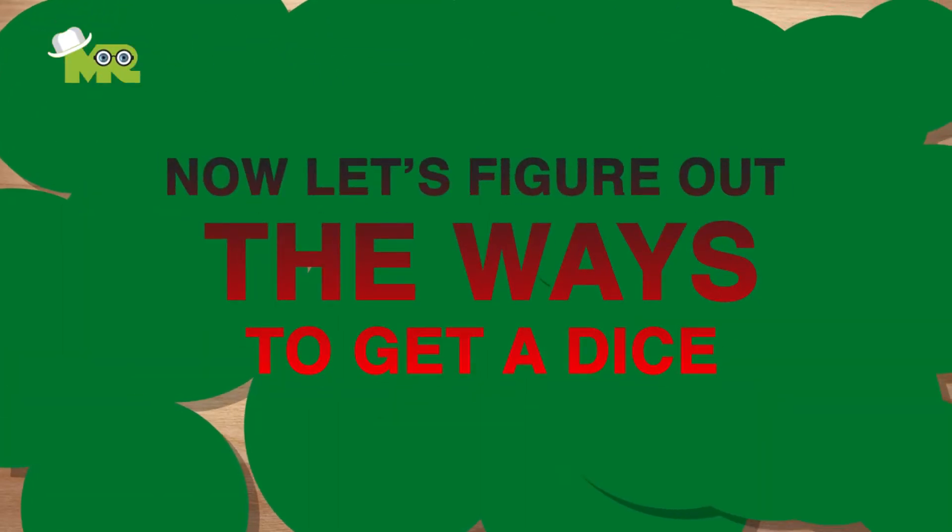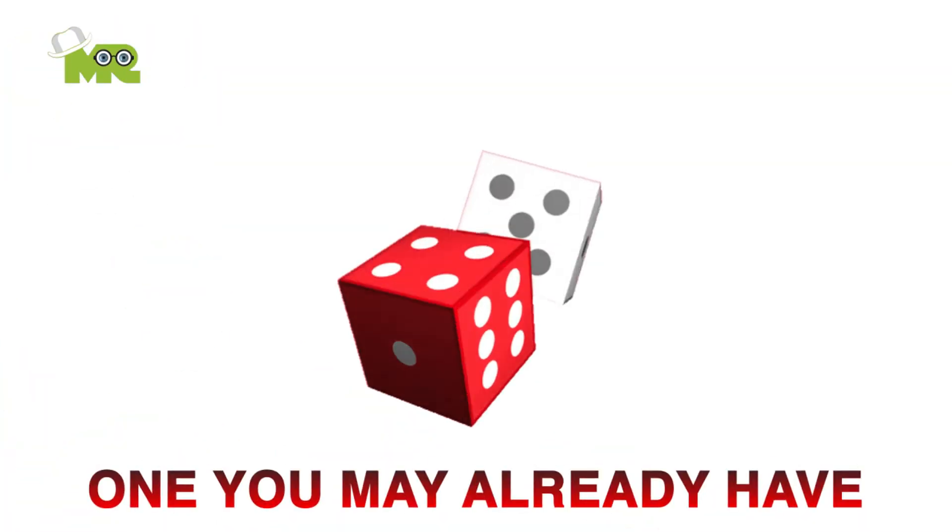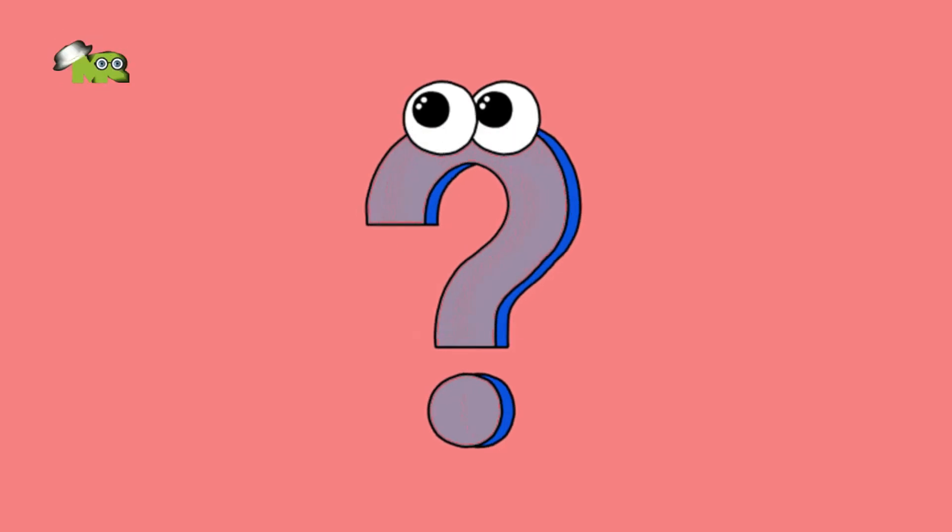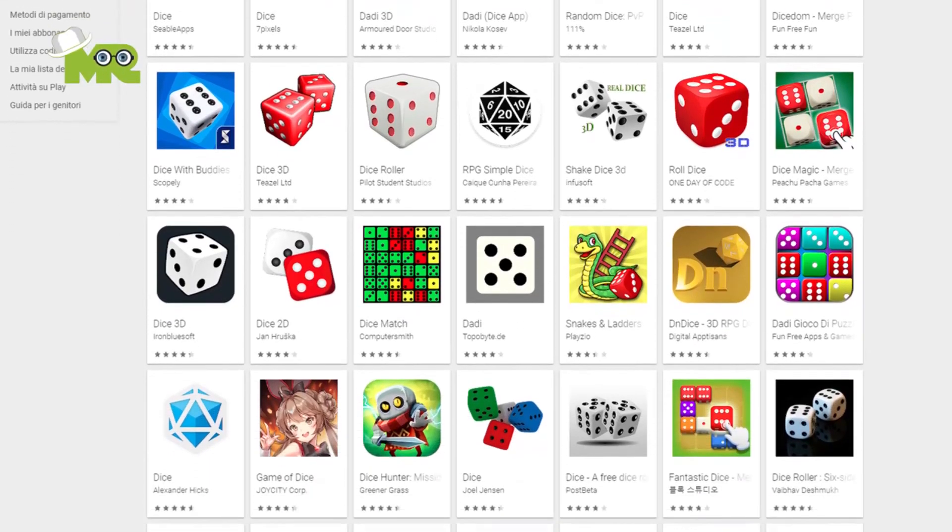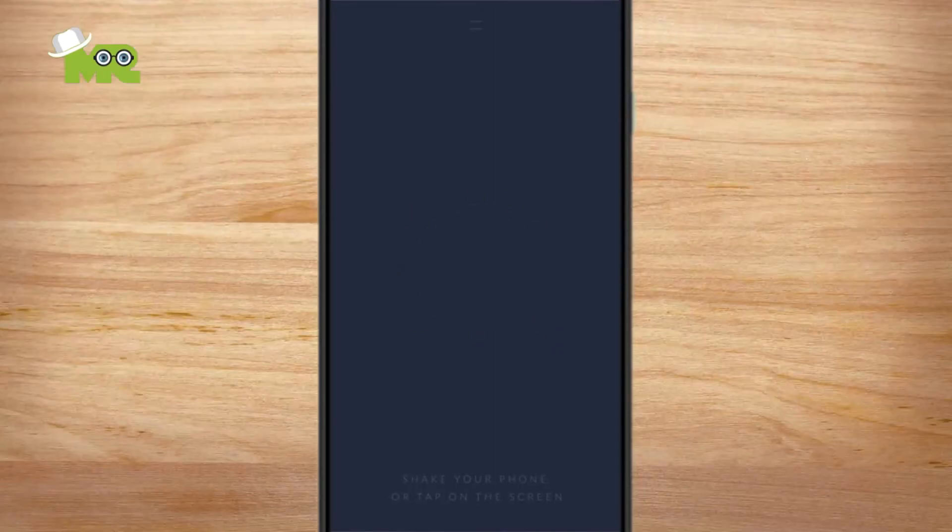Now let's figure out the ways to get two dice. Friends, if you don't have two dice to play with, then simply download any dice app on your smartphone from the App Store or from Google Play. And that turns your phone into the dice.